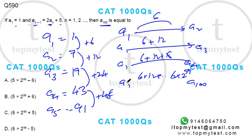So let's write this. Now a₁ itself is 1. So a₁₀₀ will be this number. So it will be 1 plus 6 plus 12 plus so on. This will be 98 terms. Right.